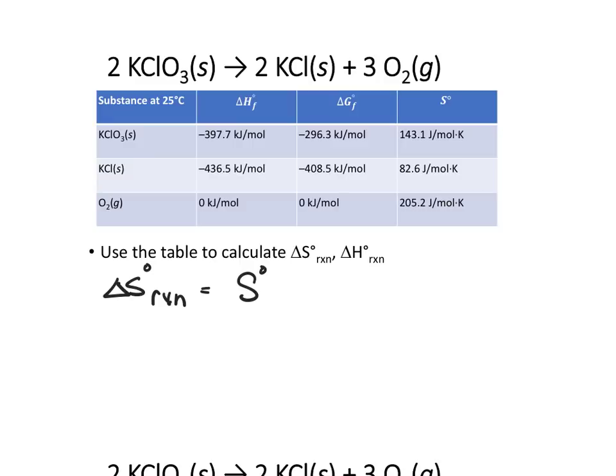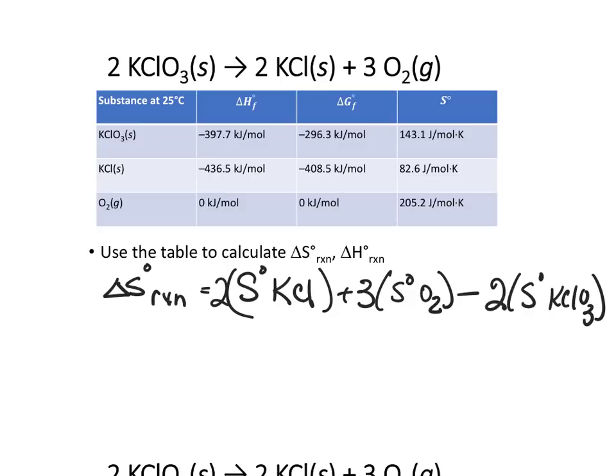We know it would be the S of KCl times 2, since there's a 2 coefficient, plus 3 times the S of O2, minus, this is the products minus the reactants, 2 times the S of KClO3. So we plug in our values, and we have, now that 2, what does that 2 stand for? It really stands for 2 moles.